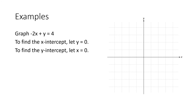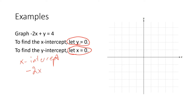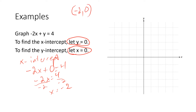Let's try that. Graph: negative 2x plus y equals 4. To find the x-intercept, let y equal zero; to find the y-intercept, let x equal zero. So we're going to start by finding the x-intercept. We substitute zero for y: negative 2x plus 0 equals 4, which simplifies to negative 2x equals 4. We divide by negative 2 on both sides, so x equals negative 2. This means our x-intercept ordered pair is (negative 2, 0).